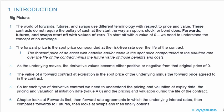The value of a forward contract at expiration is the spot price of the underlying minus the forward price agreed to in the contract. For each type of derivative contract, we need to understand the pricing and valuation at expiry date, the pricing and valuation at initiation date where the value equals zero, and the pricing and valuation during the life of the contract. The chapter looks at forwards first, then forward rate agreements in which the underlying is interest rates, then compares forwards to futures, then looks at swaps and then finally options.